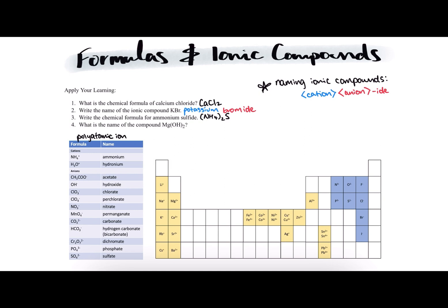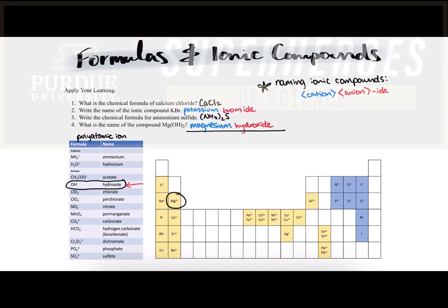Lastly, number 4 asks, what is the name of the compound Mg(OH)2? This is another ionic compound that uses a polyatomic ion. We have OH here under the anions section. The cation in this case is magnesium, which is found in group 2 of the periodic table, and it has a 2 plus charge. Our cation is magnesium, so we'll start with the name of magnesium just as it is. Our anion is hydroxide, and it already has ide on the end of it, so we'll just use it as is. So the name of the compound Mg(OH)2 is magnesium hydroxide.